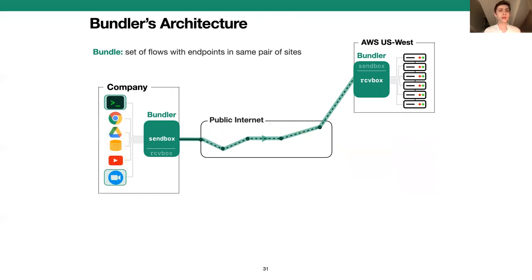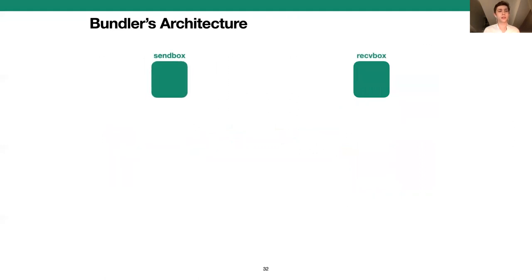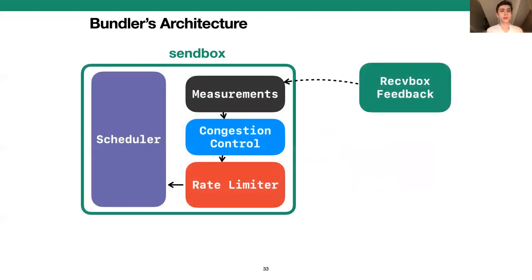Let's take a closer look inside the send box. For each bundle, the receive box is responsible for sending feedback back to the send box so that it can compute measurements about the network conditions — things like the RTT and the receive rate. It then feeds these to a congestion control algorithm, which picks an aggregate rate for the entire bundle that will cause queues to shift without sacrificing throughput. The scheduling policy then decides how that aggregate throughput is distributed among the flows in the bundle.